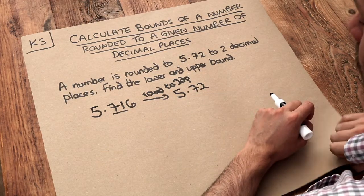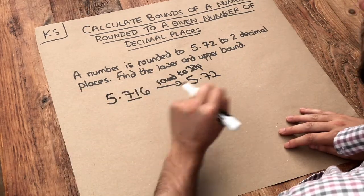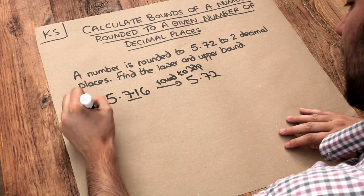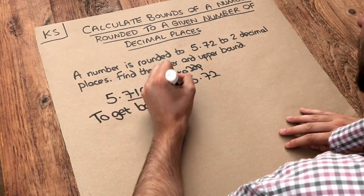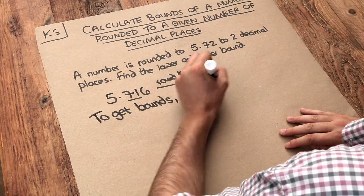But what's the lowest that we can go? Now do you remember the strategy in the previous video was to add or subtract half the accuracy. So to get bounds then we add or subtract half the accuracy.